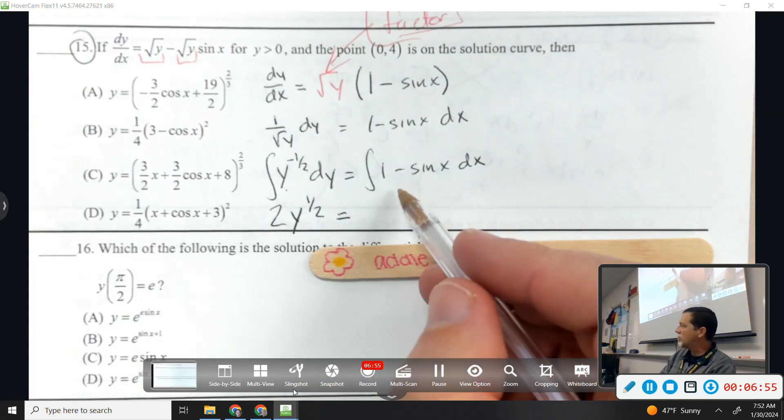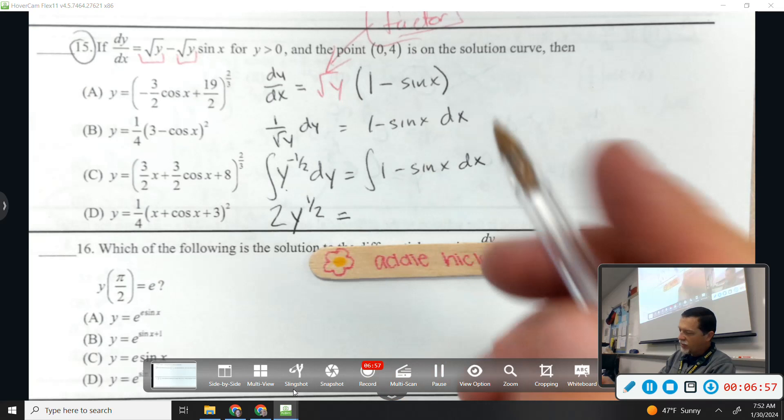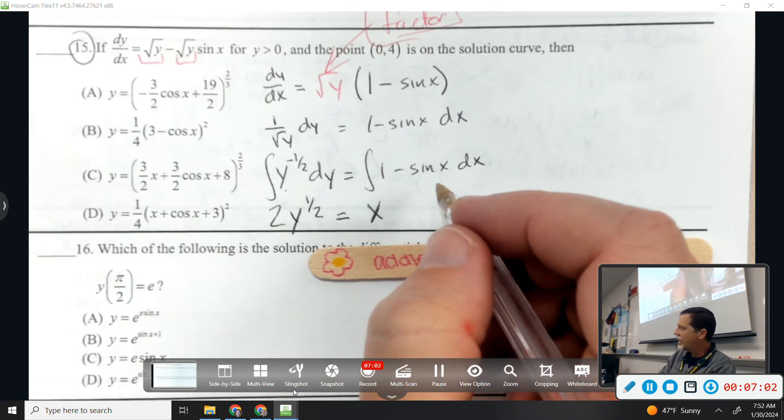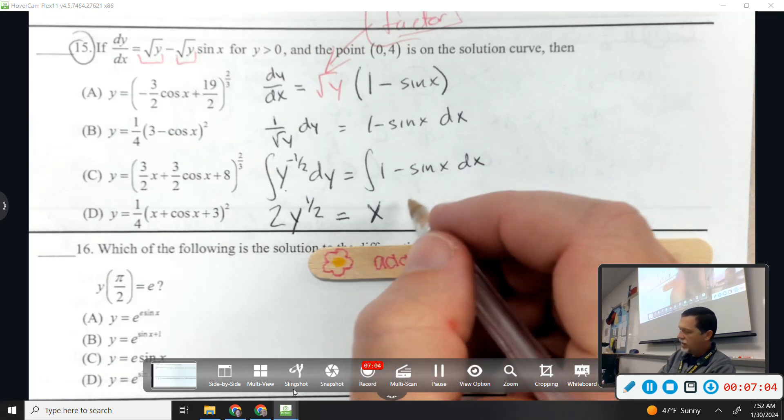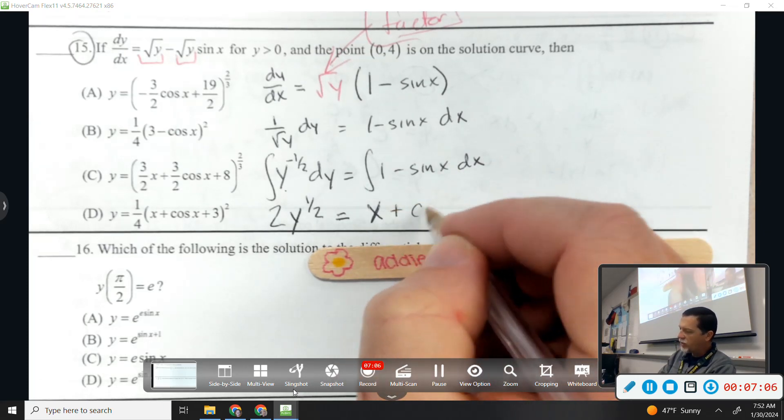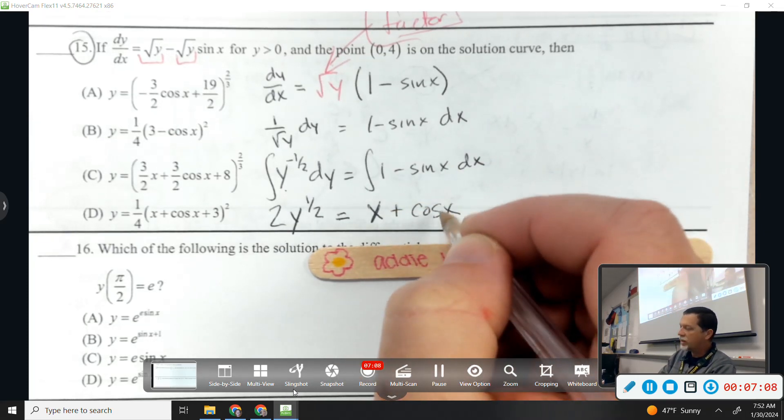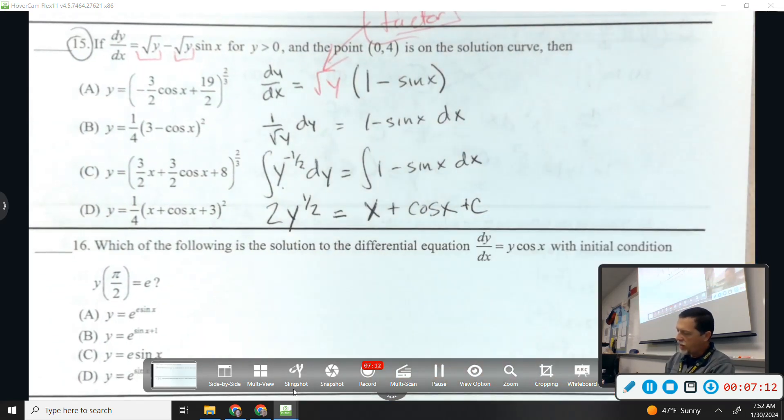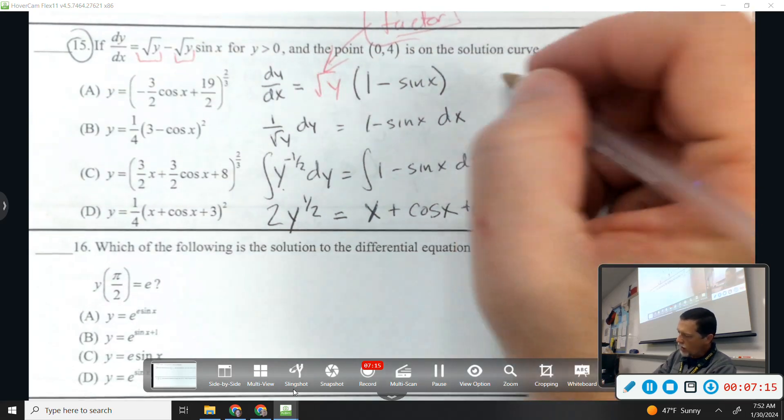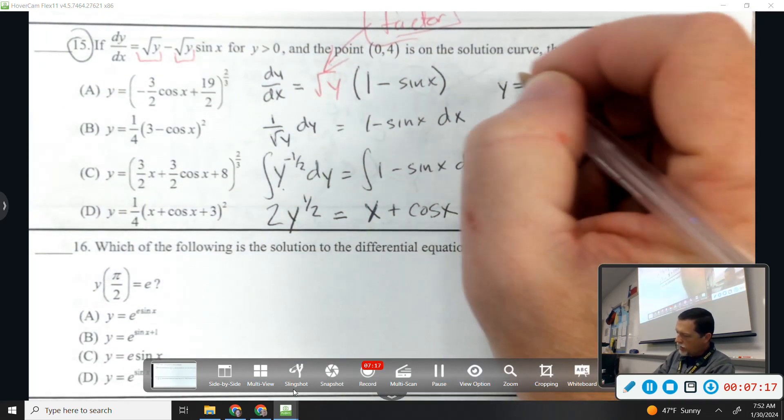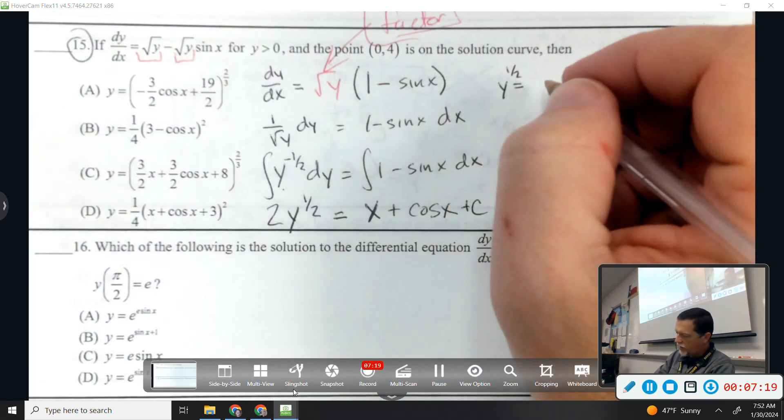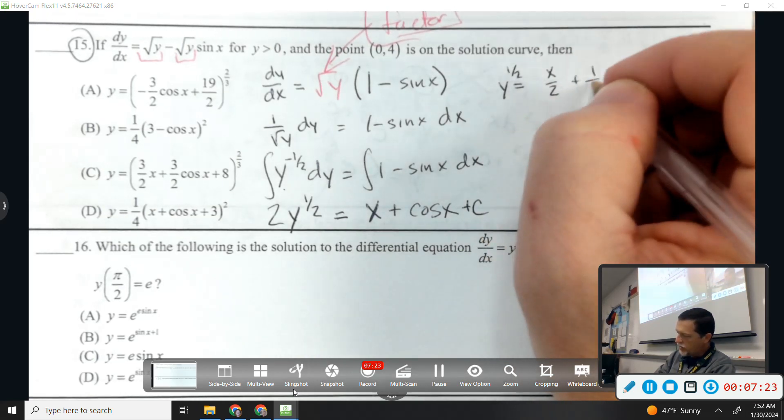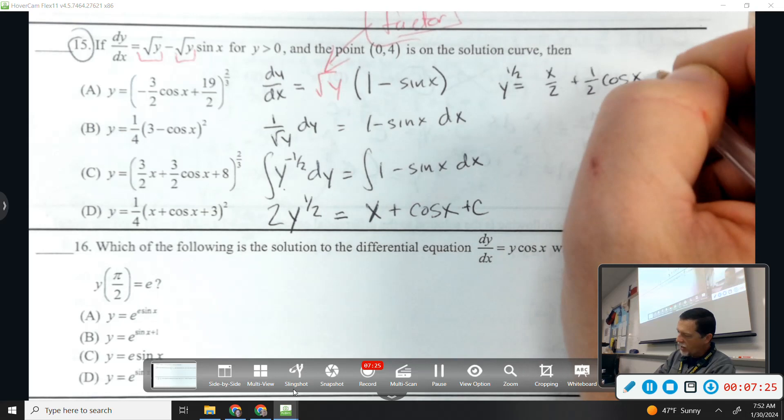Addy, you get to do two of them over here. What's the antiderivative of 1? X. And the antiderivative of negative sine? Positive cosine, because the derivative of cosine would give me a negative sine. And then plus c.